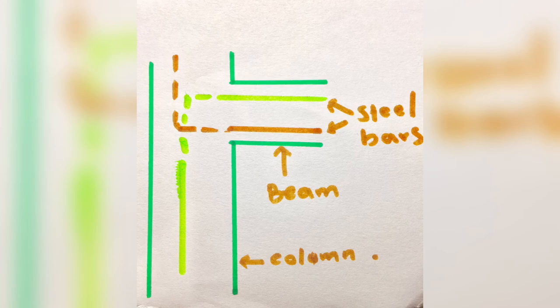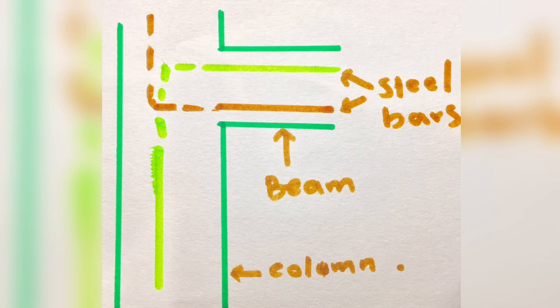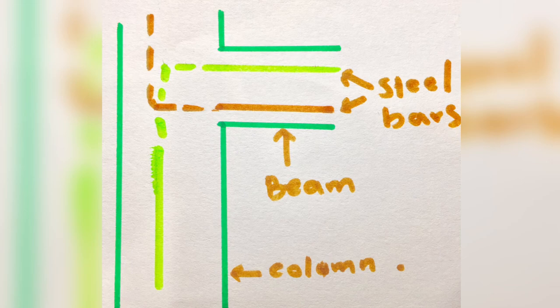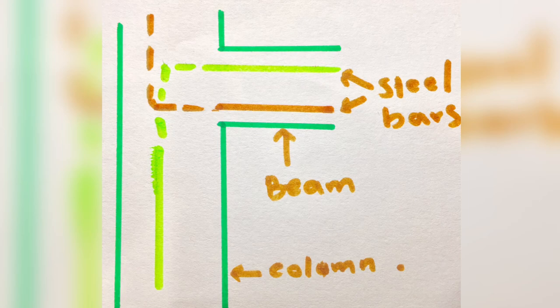These are some basic tips for lapping length. Now I will give a tip for development length also. You can see the structure - there is a beam and a column with steel bars here.